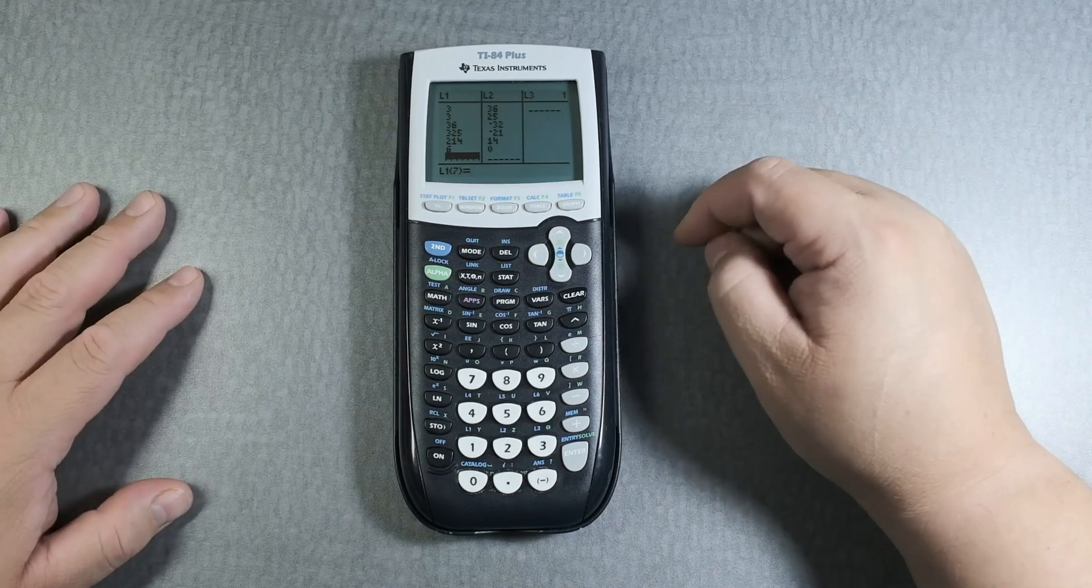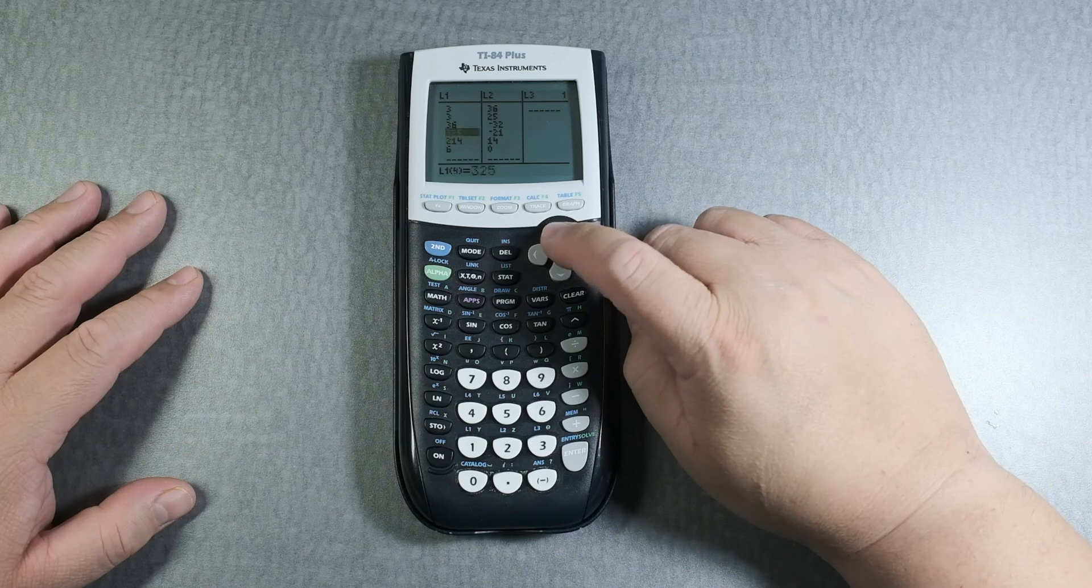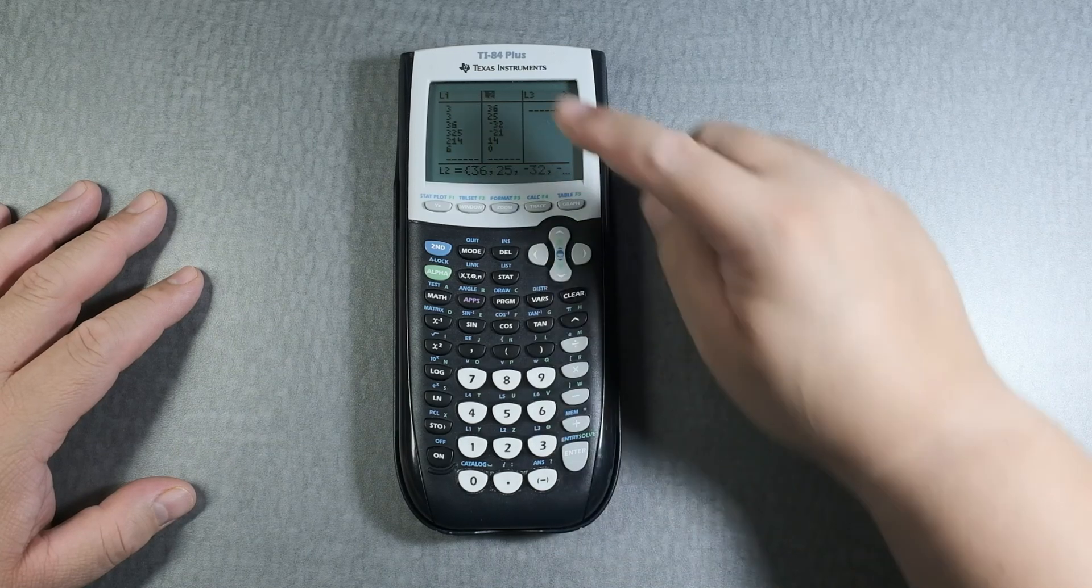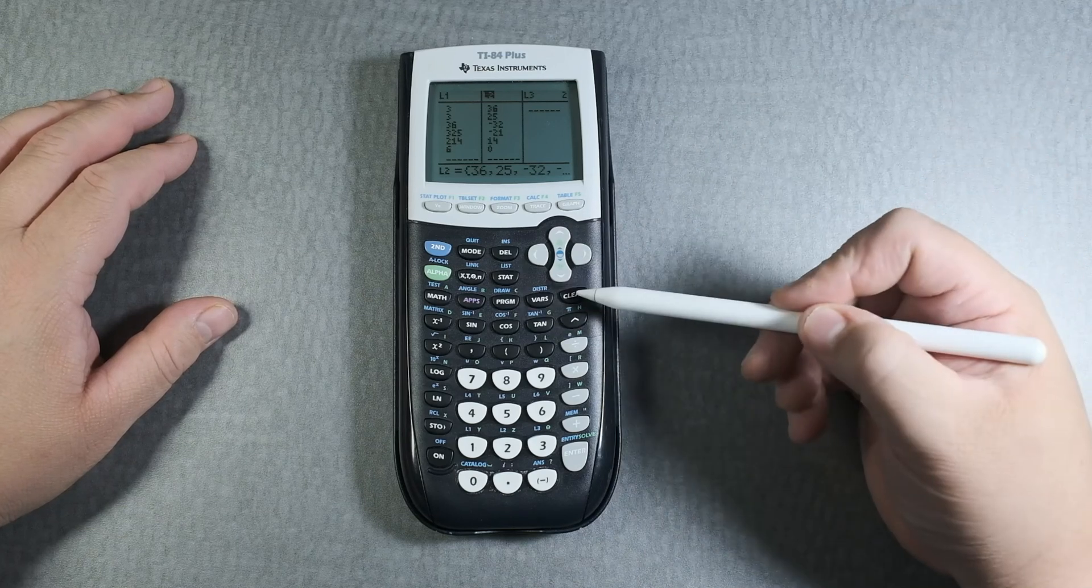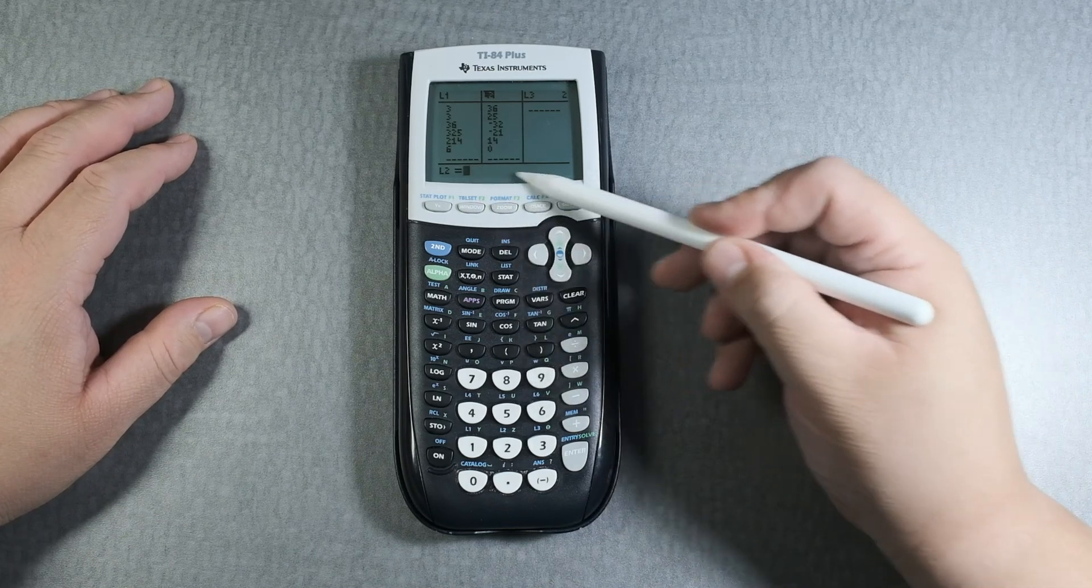One thing people always want to do is clear the column or the list. That's not a problem. If you go all the way to the top, you click on Clear, and you can see the values disappear.